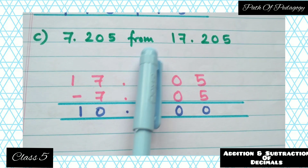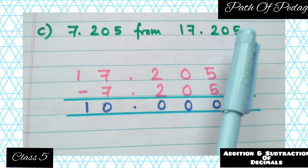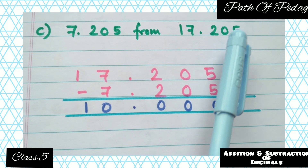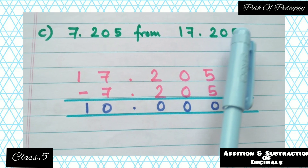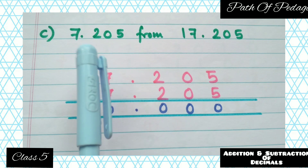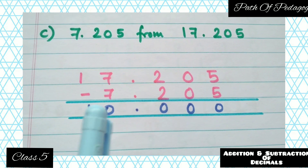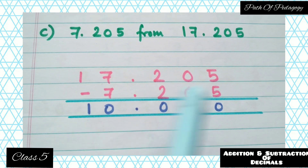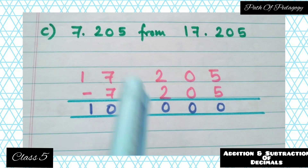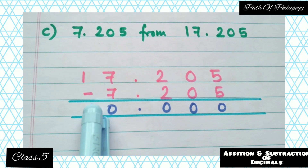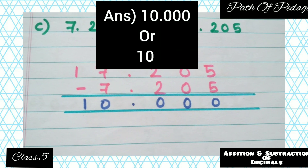Question c: subtract 7.205 from 17.205. The number after 'from' comes first, so write 17.205, then 7.205 below it. Subtract: 5−5=0; 0−0=0; 2−2=0; give the decimal point; 7−7=0; 1−0=1. So the answer is 10.000, or simply 10.